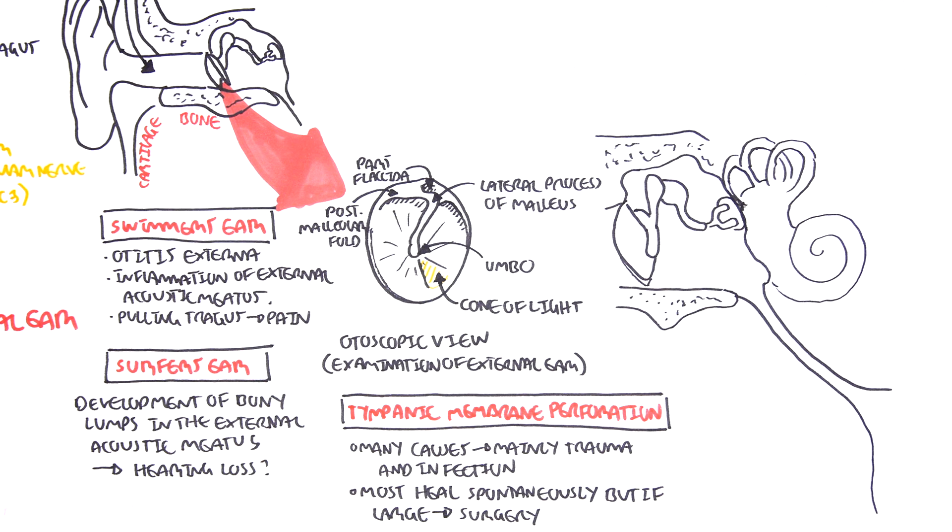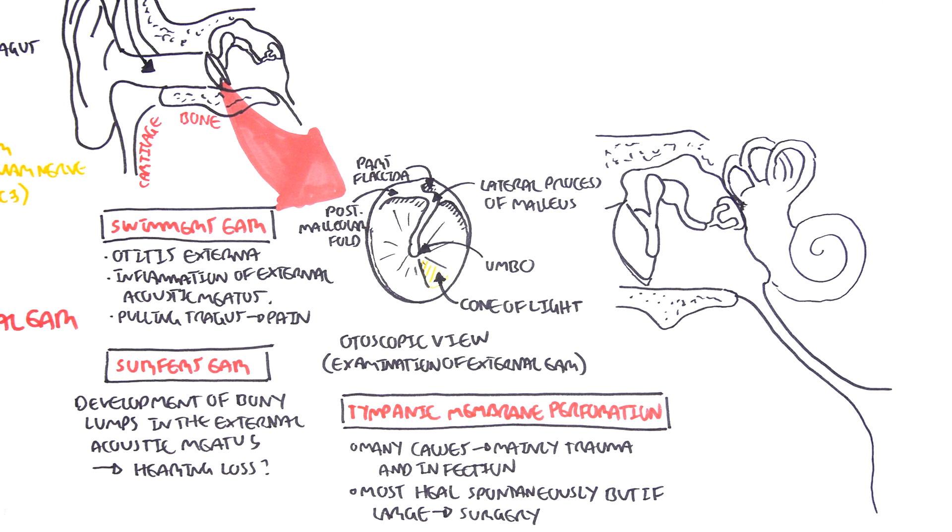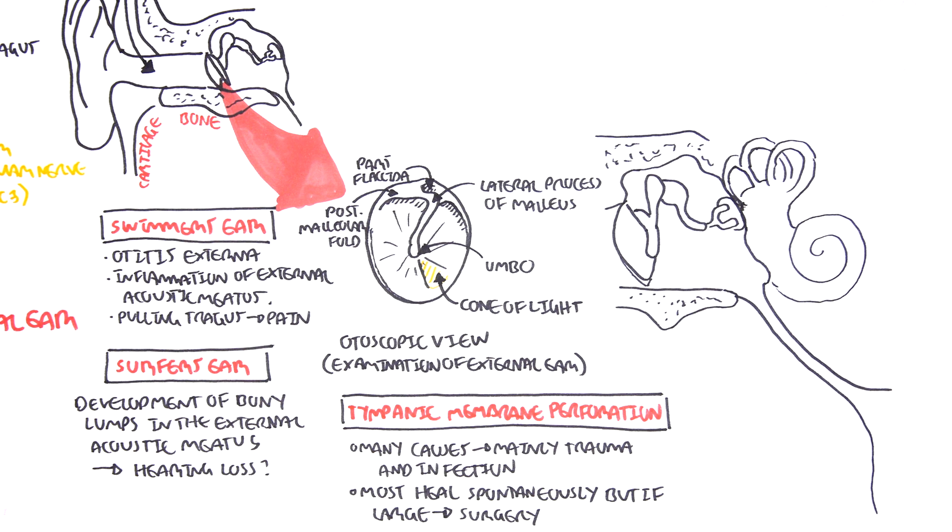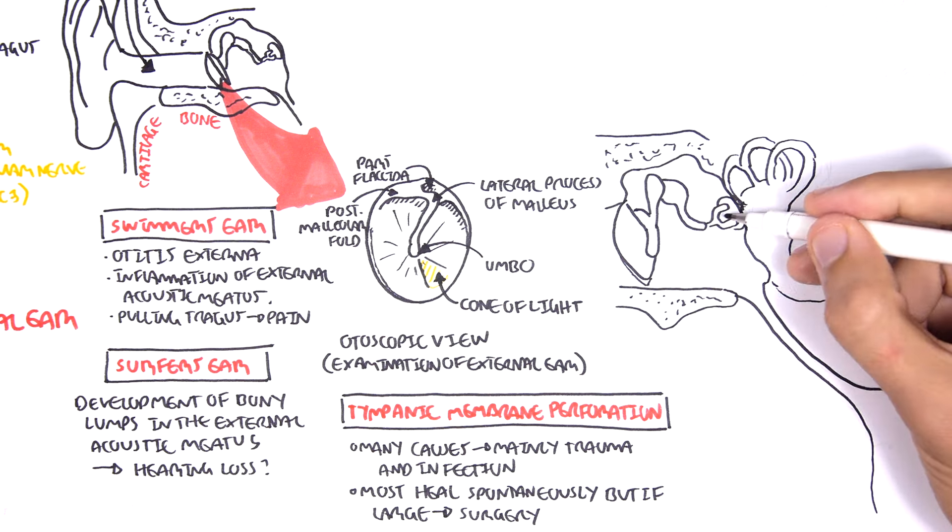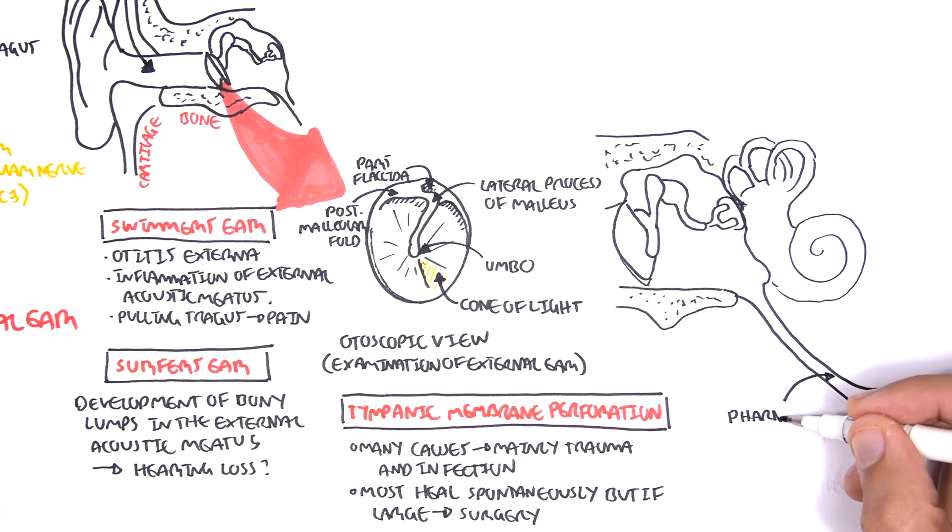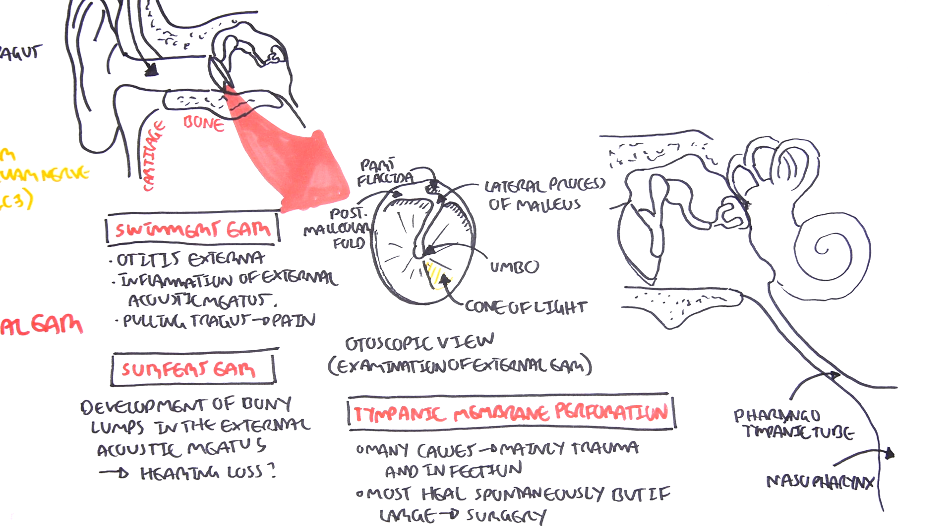It contains the auditory ossicles, the smallest bones in the body. Remember, the malleus, which is one of the auditory ossicles, articulates with the eardrum. That's why you can see some projections of the malleus on the otoscopic view. The middle ear's bony ossicles will send vibrations to the inner ear. Here is your pharyngotympanic tube, which connects to the nasopharynx. The pharyngotympanic tube is important because it equalizes pressure within the middle ear and the outside world.